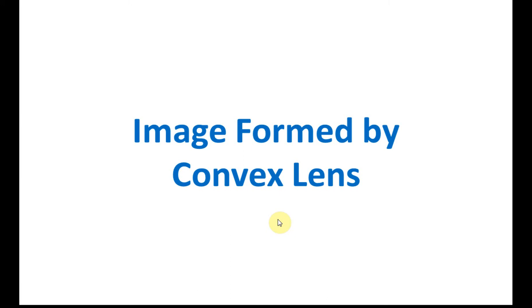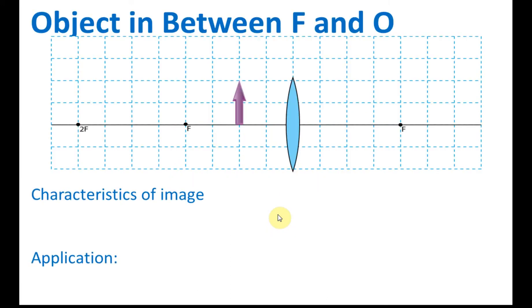The characteristics of the image formed by a convex lens depend on the position of the object. At different positions, the characteristics will be different. For example, if we put the object between the optical center O and F, let's see what the characteristics of the image will be. We use a ray diagram to help us find the characteristics of the image.